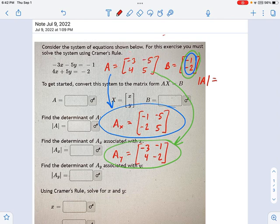The determinants of A is going to be negative 3 times 5 minus 4 times negative 5. Let's combine some terms here. This is negative 5 minus negative 20, so that's plus 20. So the determinant of A is 5.